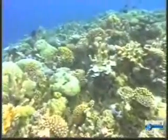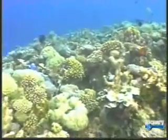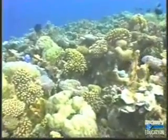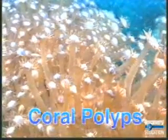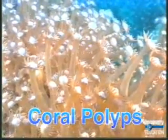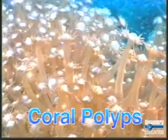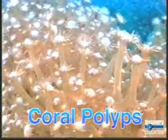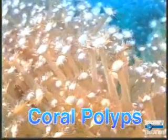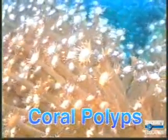The reef itself may look like a collection of rocks or boulders. But actually, it's a living, growing organism — a colony of tiny animals called coral polyps. These little polyps all work together to create huge and varied reefs, some of which are the largest structures on Earth, stretching hundreds of miles across.